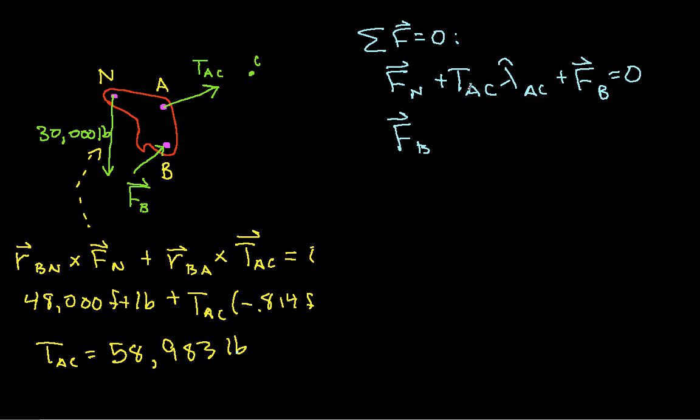So when I plug in numbers for F_N, T_AC, lambda_hat AC, and do the math, I get minus 29,023 pounds i-hat minus 21,349 pounds j-hat. So this is the X component. You might sometimes see this represented F_BX. This is the Y component, F_BY.